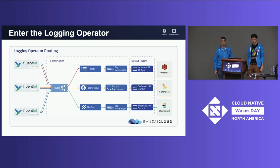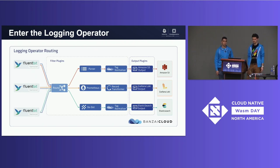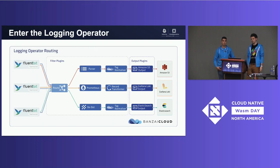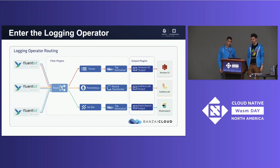Under the hood, logging operator deploys a Fluent Bit daemon set which tails those files, attaches Kubernetes metadata, and sends all the logs to Fluentd. Fluentd has a special plugin called the router which lets you route different kinds of logs based on Kubernetes metadata. For example, if you have a label like "app: nginx," you know those logs will be nginx access logs and you can configure your log pipelines accordingly — extracting metrics, parsing files, and sending them wherever you want. I could go on for hours about logging operator, but this isn't a deep dive on that.